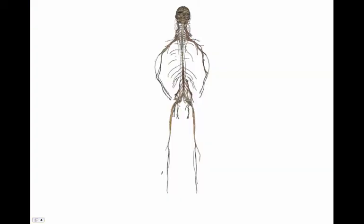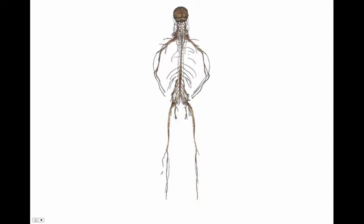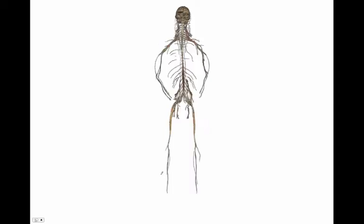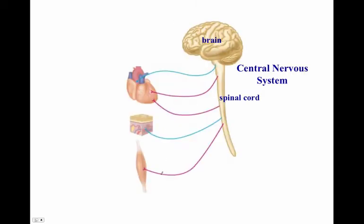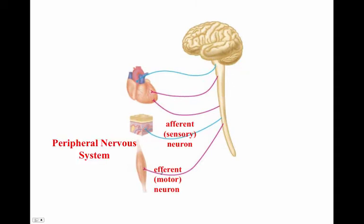Here are some images of what it would look like if we were to dissect out an entire nervous system, including the central nervous system and peripheral nervous system. The central nervous system is comprised of the brain and spinal cord, and we have the afferent or sensory neurons and the efferent or motor neurons in the peripheral nervous system.